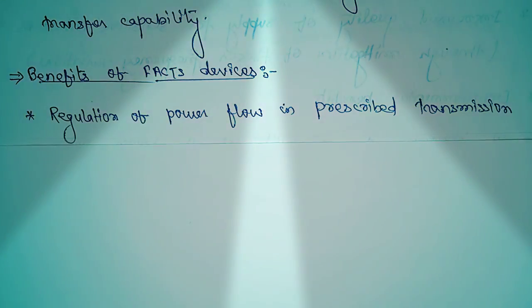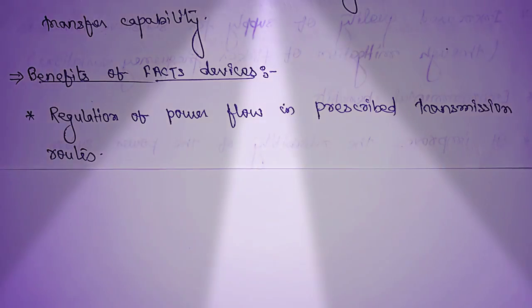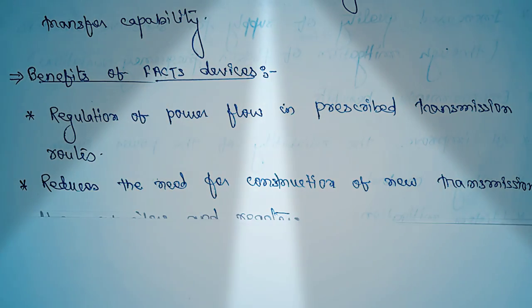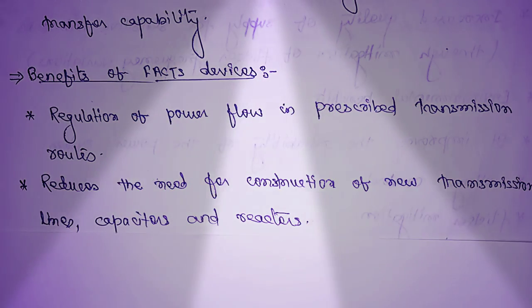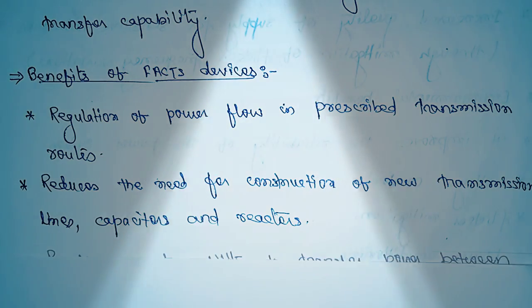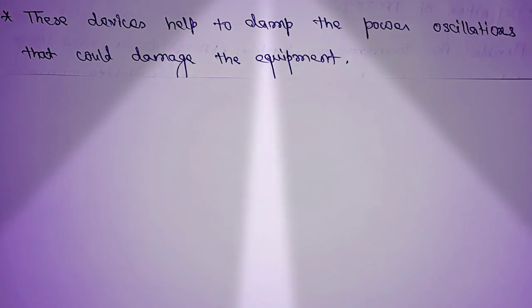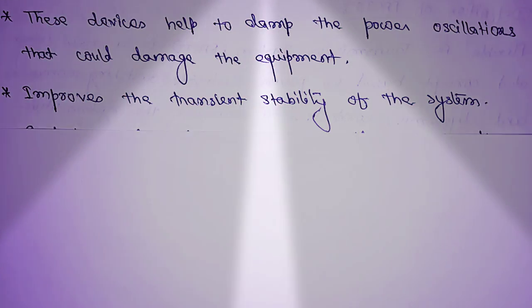First, regulation of the power flow in the prescribed transmission routes. Second, reduces the need for the construction of new transmission lines, capacitors, and reactors. Third, provides greater ability to transfer power between the controlled areas.